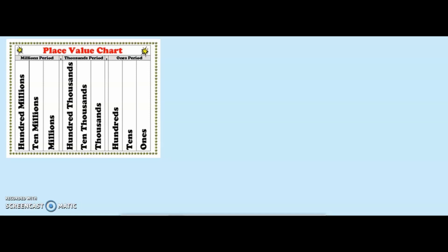Let's look at a number: 3, 6, 4, 5, 2, 1, 3. Notice there are two digits that are the same, but the value of these two digits are going to be different. Why? Because each is placed in a different position in the number.